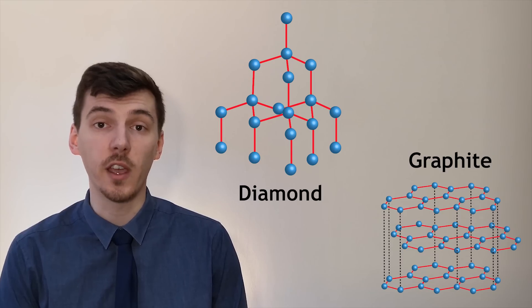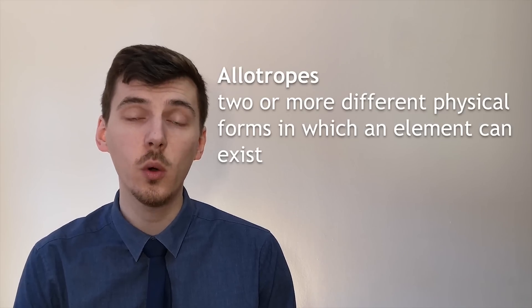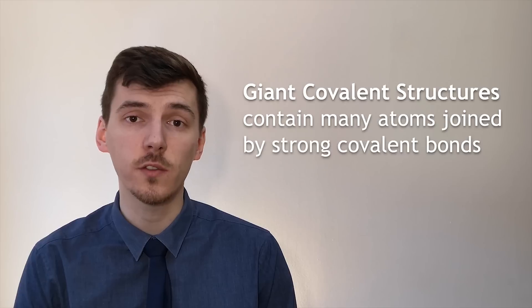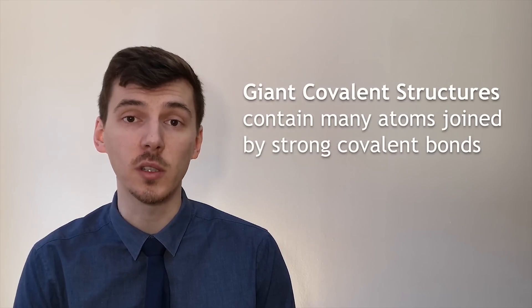Diamond and graphite are different forms of carbon. Carbon has lots of different forms and we call these forms allotropes. We can call all of these different forms giant covalent structures as they're made up of lots and lots of carbon atoms covalently bonded together.